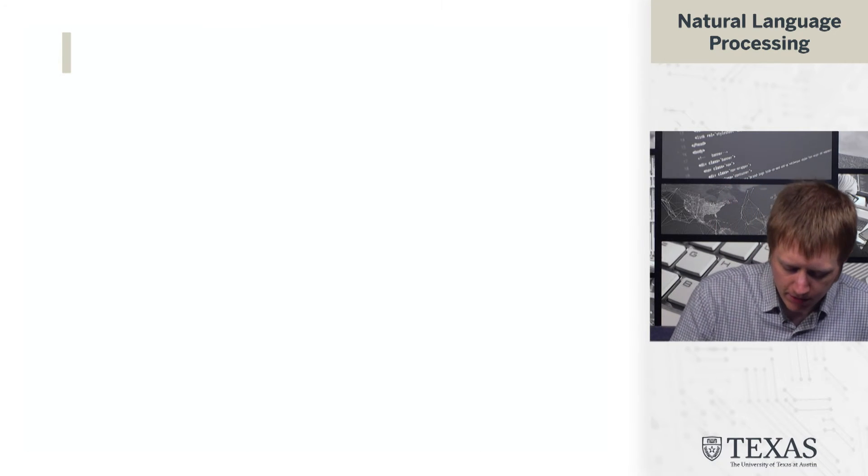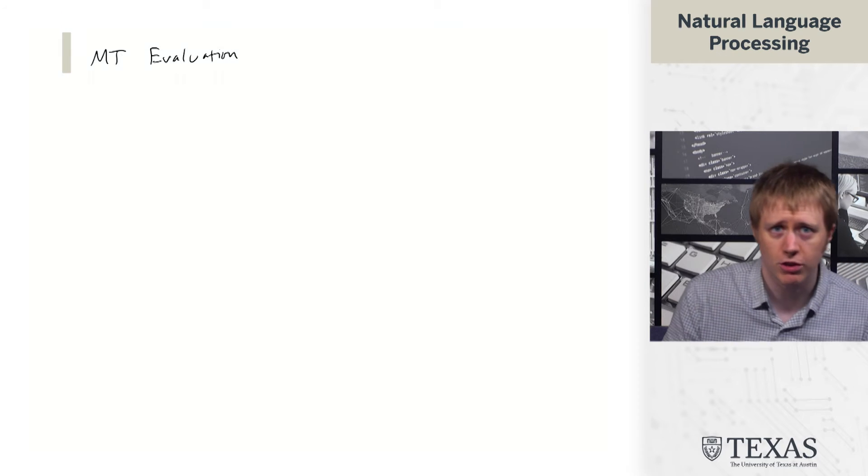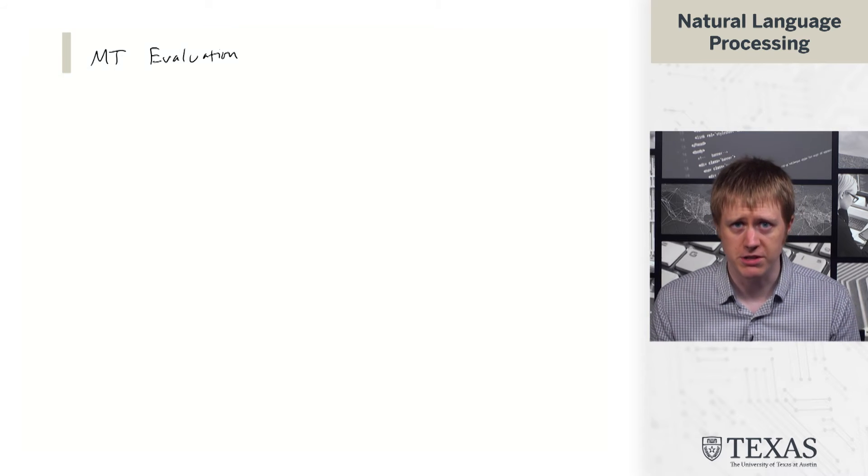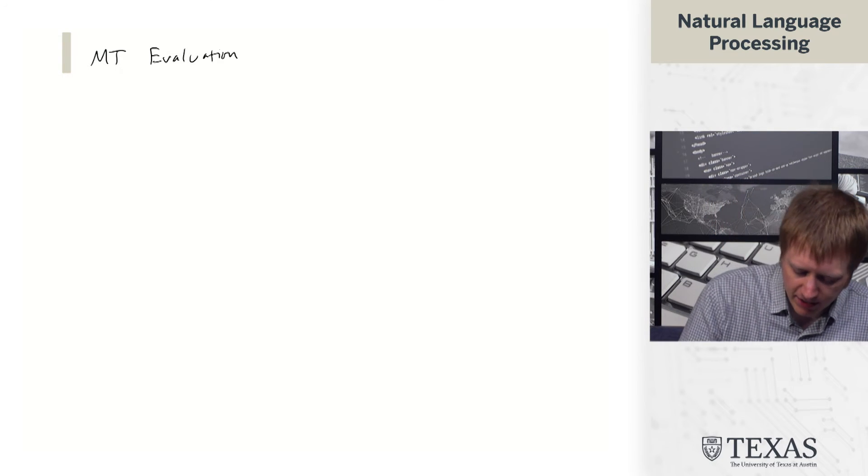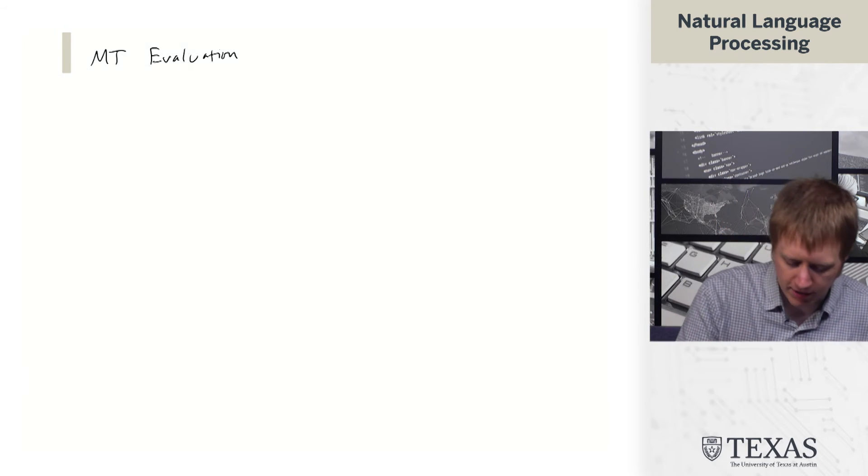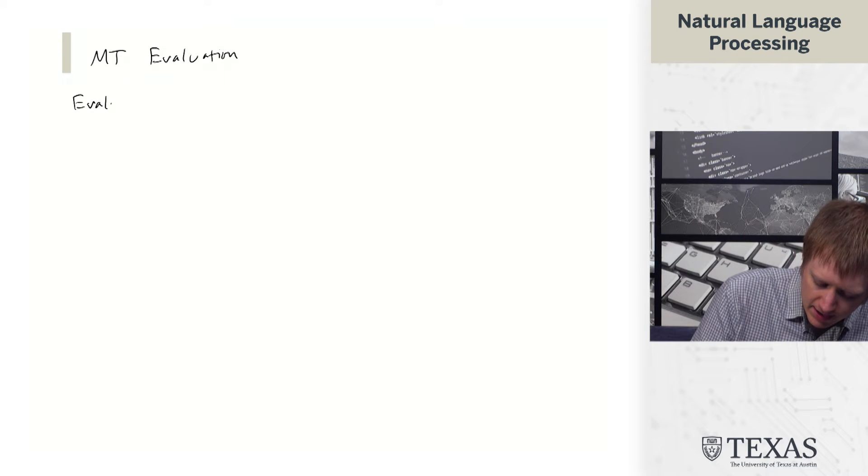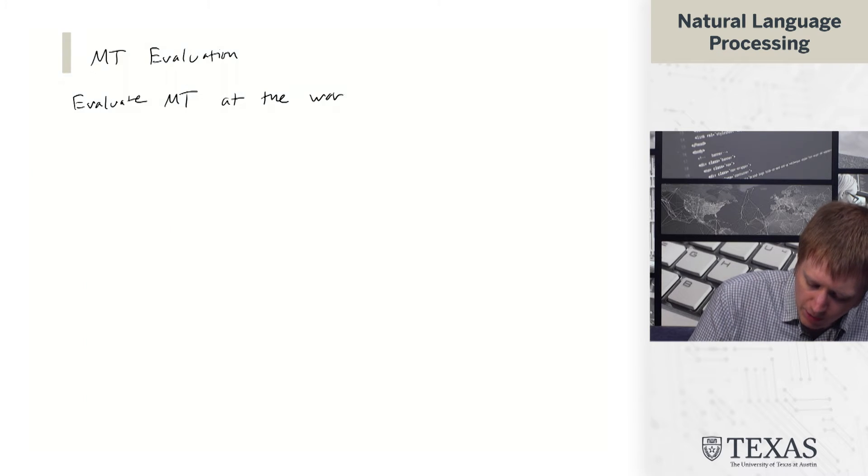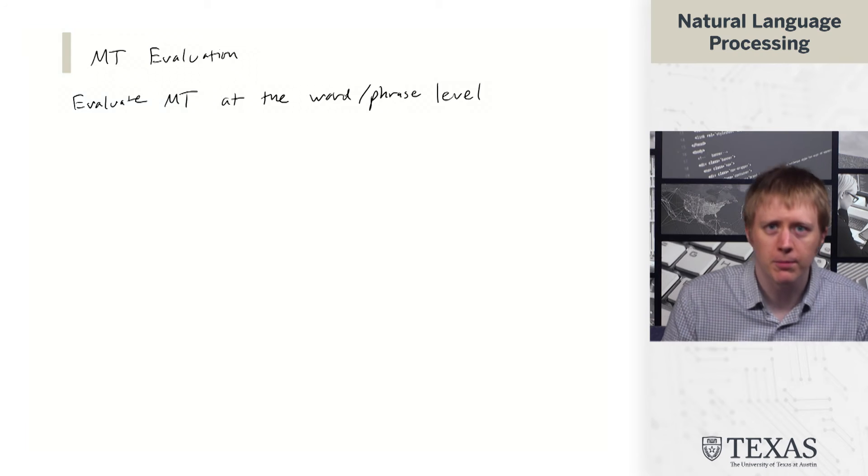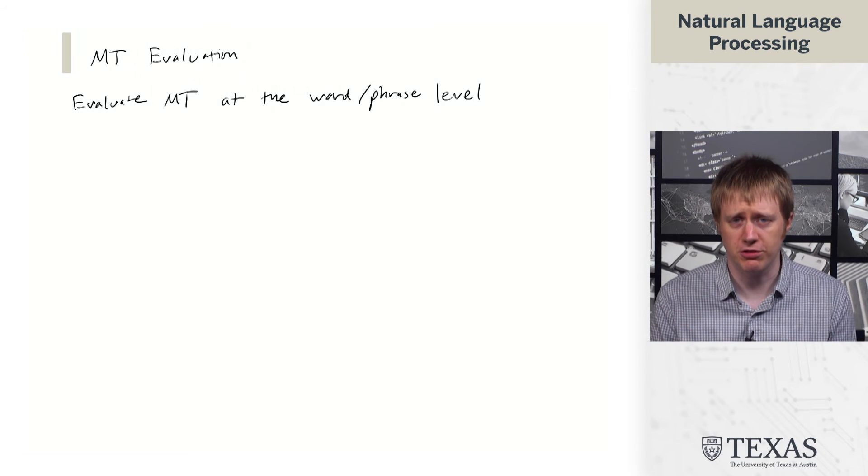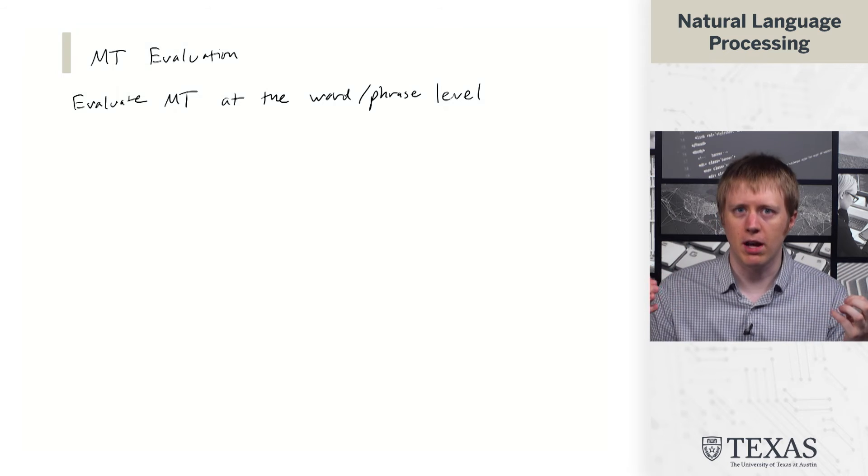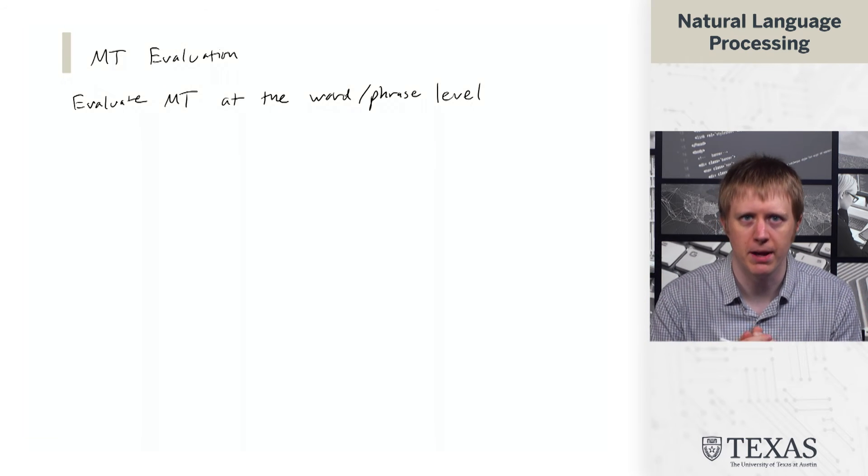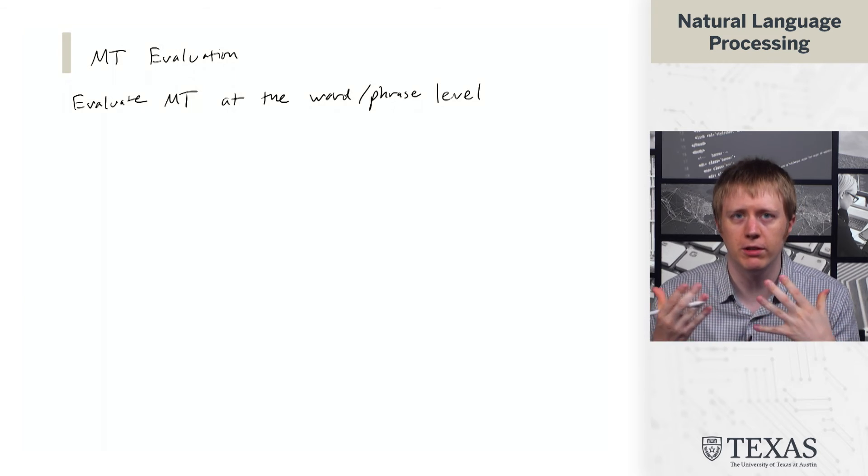The thing I want to talk about first, which ties into the triangle that we saw here, is the idea of evaluation. It turns out that it's pretty convenient to evaluate MT at the word/phrase level. People have been working on MT for a long time and there are a lot of metrics and people have whole competitions about coming up with better metrics that correlate better with human judgments of translation. So there's a whole really rich literature on this.